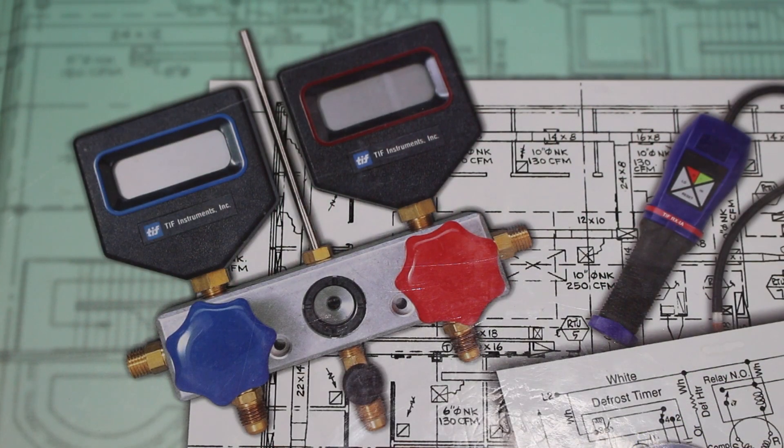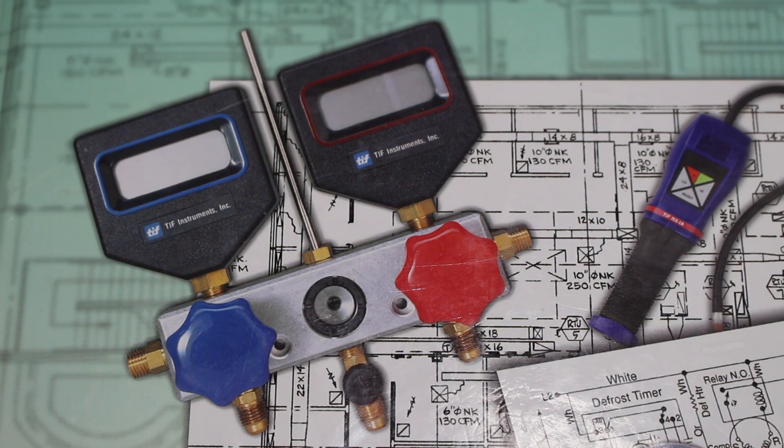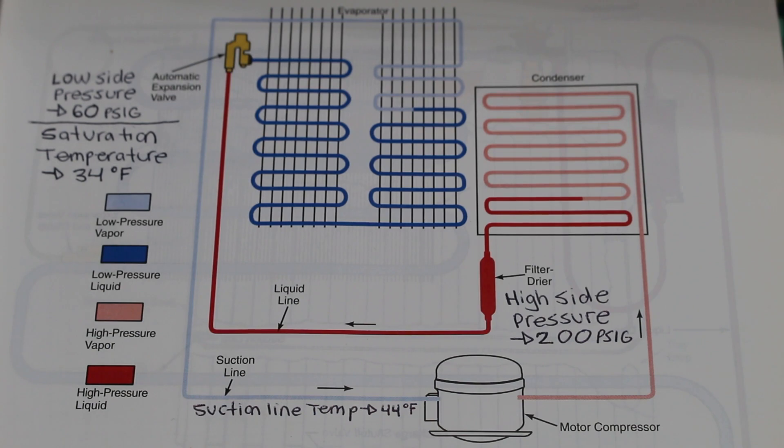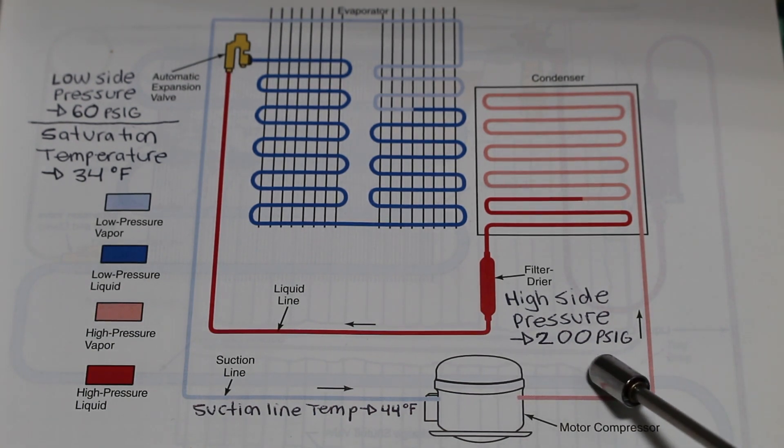Next, we can begin to calculate subcooling in real life. To calculate subcooling, we're going to focus on the high side of the system. Once our refrigerant gauges are connected, we're going to have our pressure readings. For example, let's say we have a reading of 200 PSIG head pressure for a R22 system.